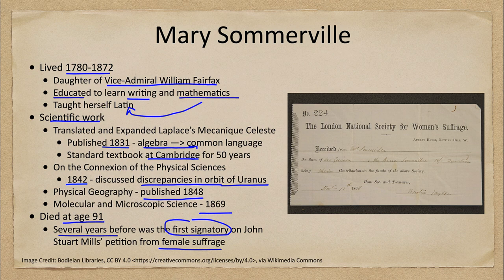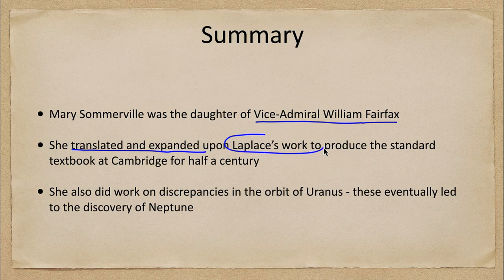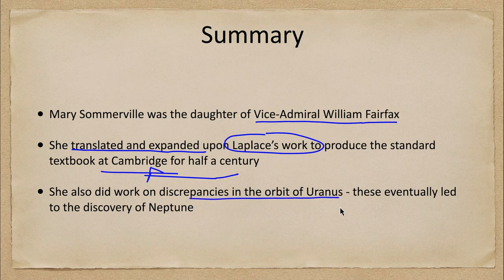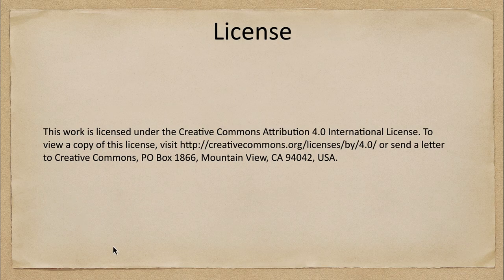To summarize: she was the daughter of Vice Admiral William Fairfax, and one of her biggest works was to translate and expand upon Laplace's work to produce what became the standard textbook at Cambridge for half a century. She also did work on the discrepancies in the orbit of Uranus, which eventually led to the discovery of Neptune. That concludes this discussion of Mary Somerville. We'll be back next week to discuss another woman in astronomy — until then, have a great day everyone and I will see you in class.